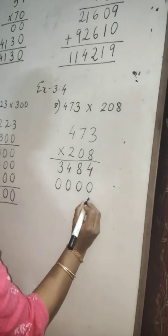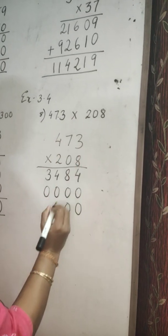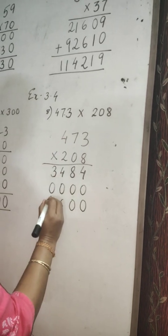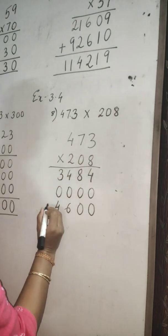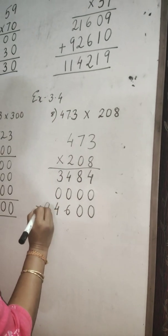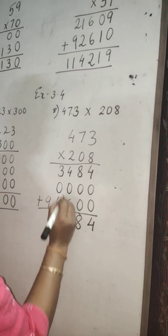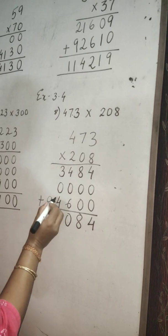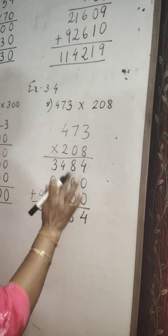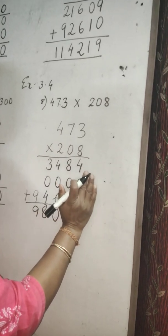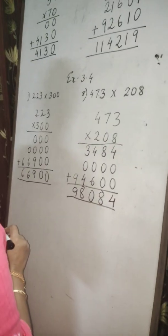Now to multiply with the 3rd digit, leave the 1st place. 2 times 3 is 6. 2 times 7 is 14 — write 4, carry 1. 2 times 4 is 8 plus 1 is 9. Now add it: 4, 8. 6 plus 4 is 10, carry 1. 4 plus 4 is 8 plus 1 is 9. Remember, while adding, always add from the right-hand side. We got the answer 98,084.